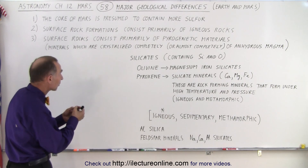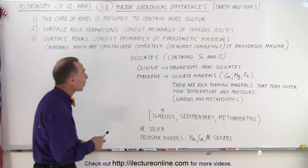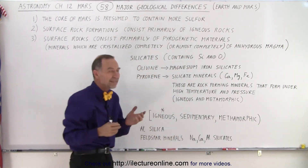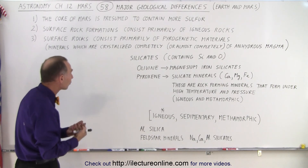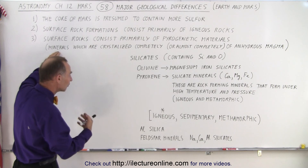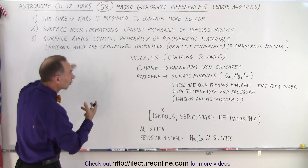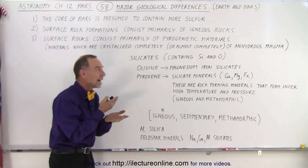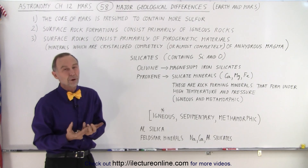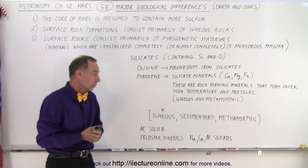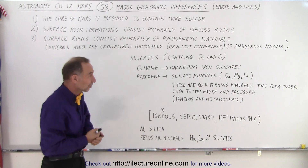Now the surface rocks — when we talk about the loose rocks they find on the surface — consist primarily of what we call pyrogenic materials. What that means is that they were formed with lava, with a lot of heat associated. These minerals that are formed within those rocks are crystallized completely, or almost completely, of anhydrous magma. In other words, there wasn't a lot of water present when these rocks were formed, and of course that is considered normal for Mars, because water is relatively scarce on the surface of Mars.